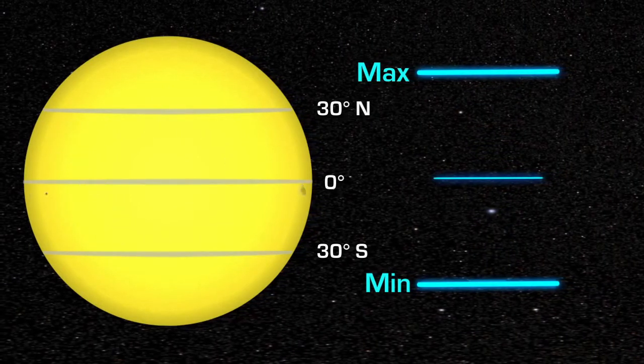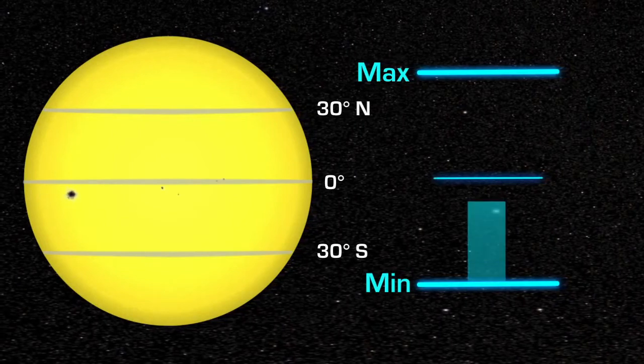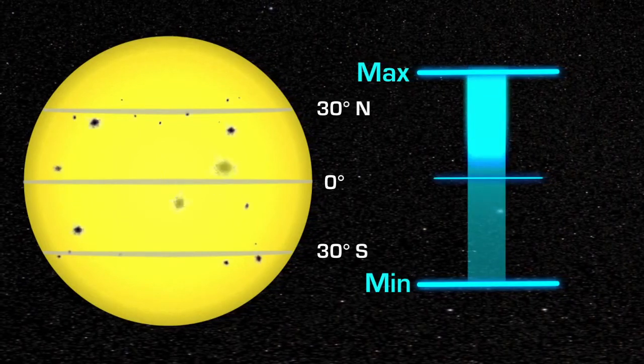At solar minimum, there are sometimes no sunspots to observe. At solar maximum, there can be many at the same time.